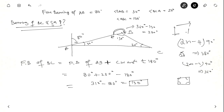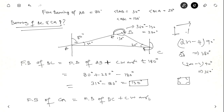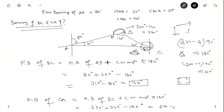Now we want the fore bearing of CA. Fore bearing of CA equals fore bearing of BC plus clockwise angle from back station at C, plus or minus 180 degrees. The fore bearing of BC is 130 degrees. The clockwise angle from the back station at C is 360 minus 20, which equals 340 degrees. So 130 plus 340 equals 470, minus 180 equals 290 degrees. Therefore, the fore bearing of CA is 290 degrees.